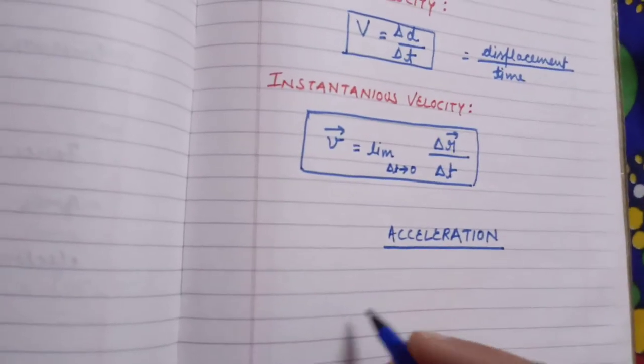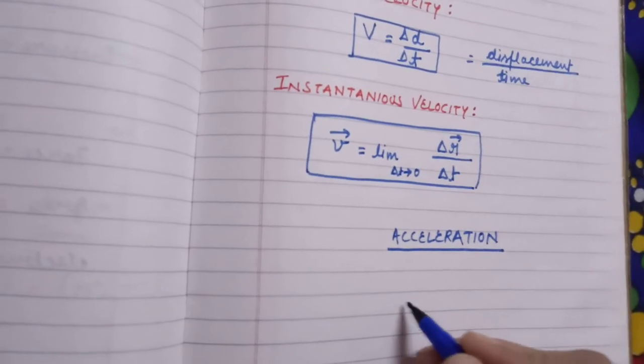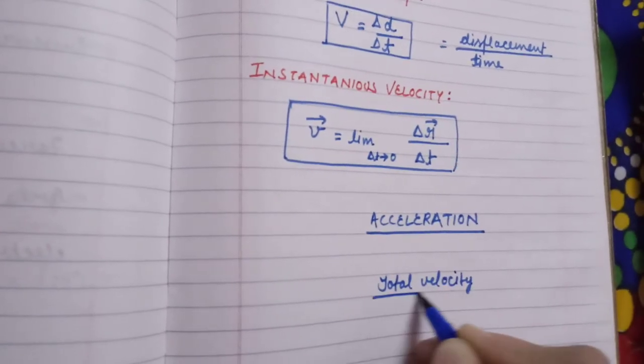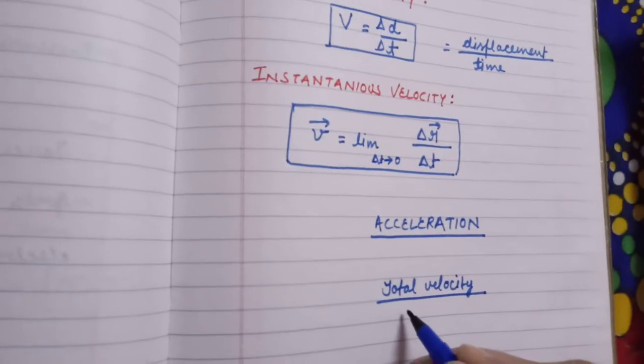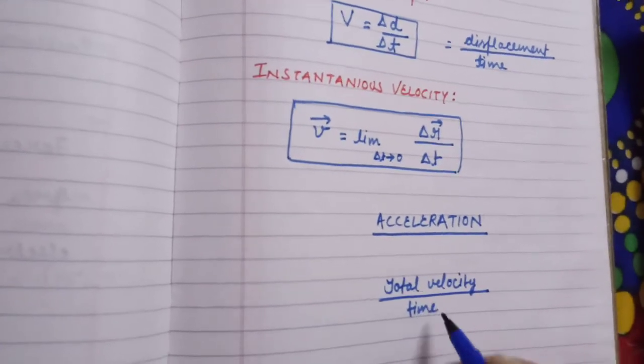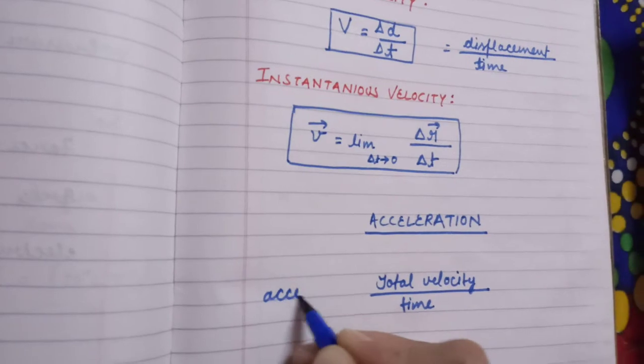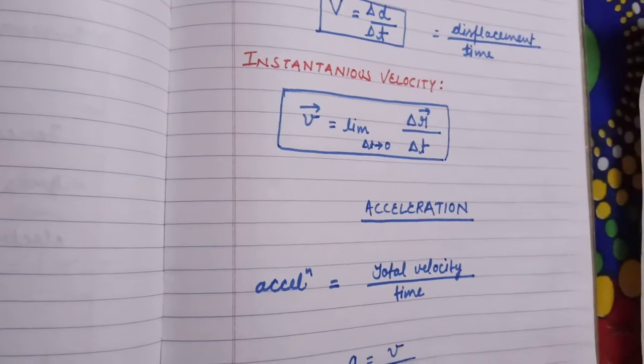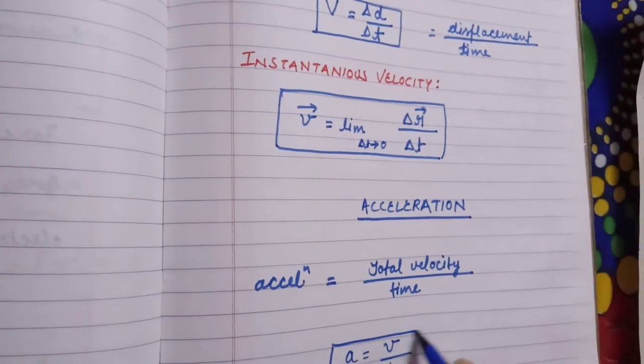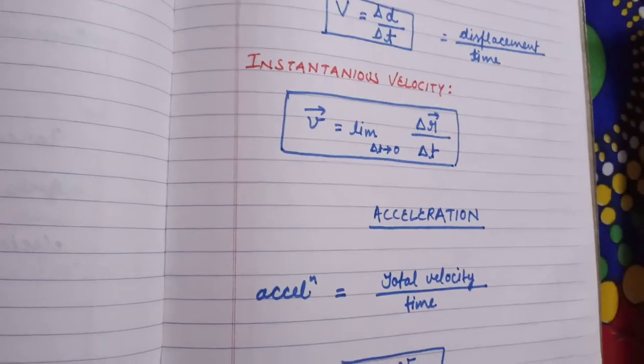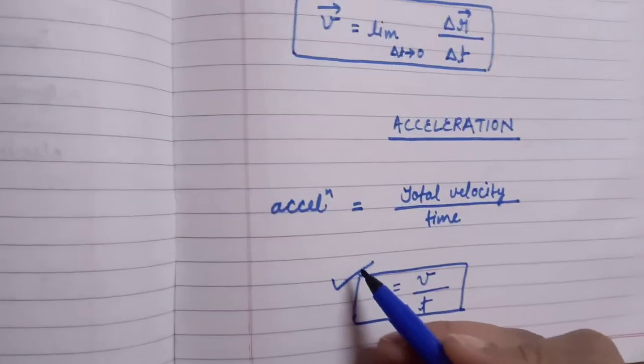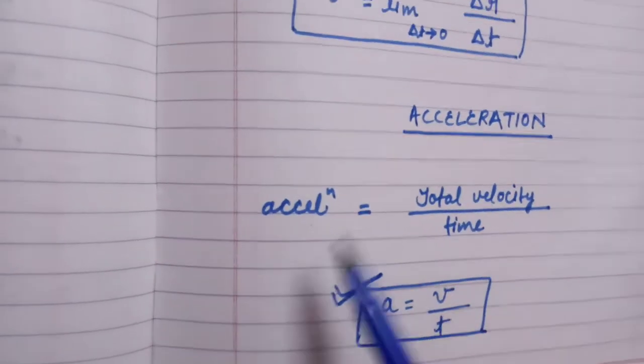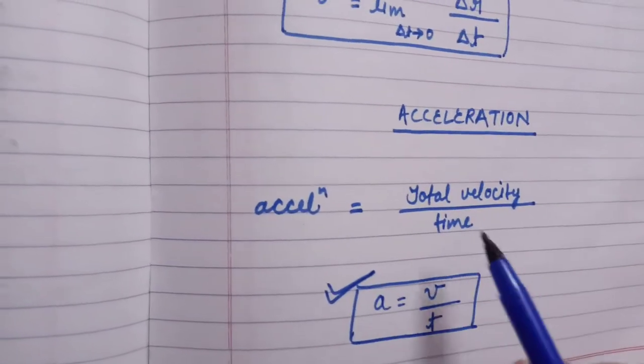It is defined as the ratio of velocity. a is equal to v upon t. This is the formula for acceleration: a equals v by t, acceleration equals total velocity upon time.